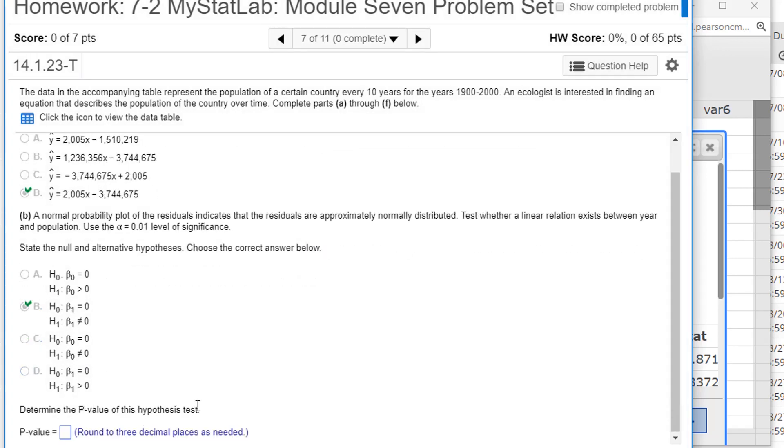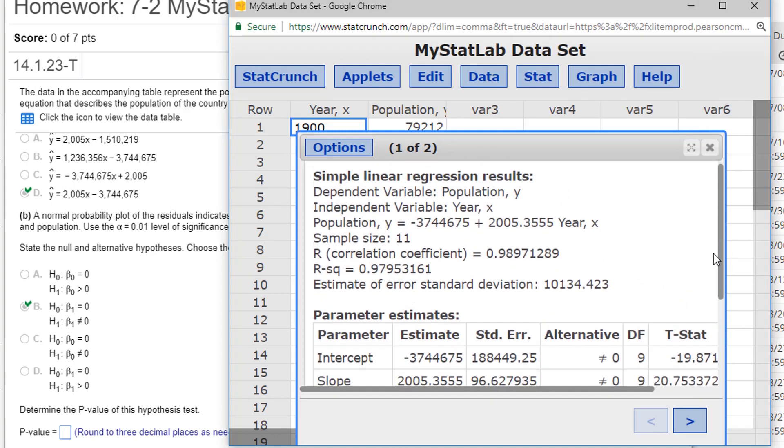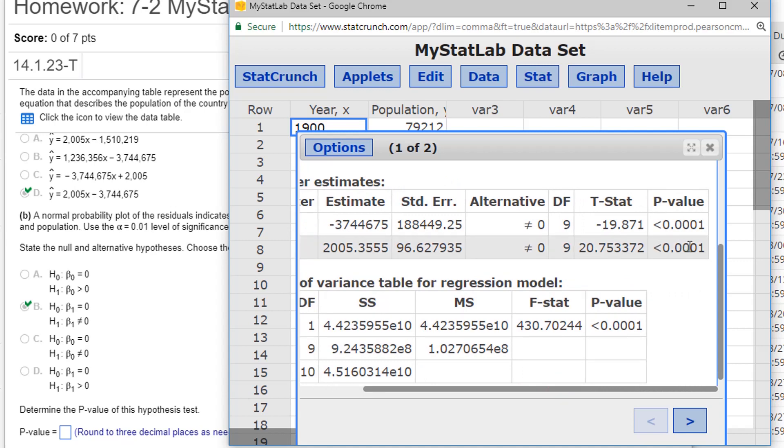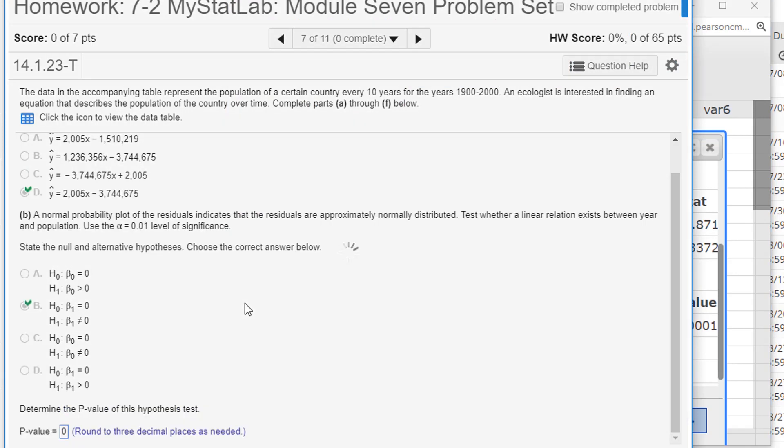Now determine the p-value for the hypothesis test. That is done in StatCrunch. If we pop back into StatCrunch, we can see that's actually been done for us. When we do the linear regression down below, we're given a slope estimate of 2005. The alternative was that the slope was not equal to zero, and if you scroll across, the p-value was 0.0001. So it's virtually nothing, like virtually zero, it's less than that. So the p-value is essentially zero. Remember we don't care about the intercept, although that also was significant. Now you'll also see the analysis of variance table for regression model. That's going to have the same p-value as the slope does. That's going to be the case always when you have a simple linear regression. This is just asking the question: is a linear model appropriate? And for a simple linear regression, that question is the same as asking is the slope non-zero? So the p-value is zero, I'm going to just put in the zero. Excellent.